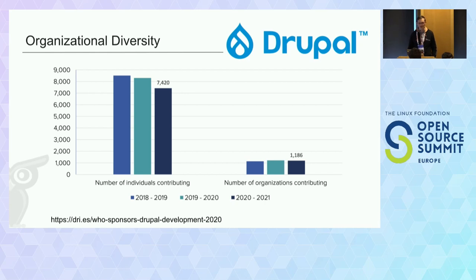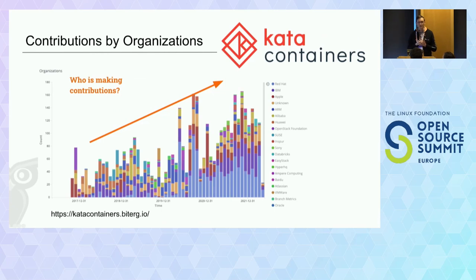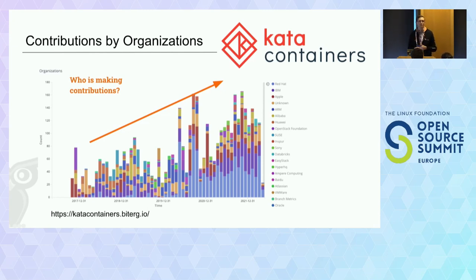Looking at those numbers, the number of organizations supporting Drupal stayed mostly consistent, and even with the drop-off, still shows healthy support. Another community to highlight is the Kata Containers community. Excluding the founding companies, they have the strategic goal of growing the number of organizations contributing to the project. We can see an upward trend of more contributions coming from non-founding members, and as more companies join, the graph becomes more colorful too. The metrics give support that yes, the strategy they are following is successful.